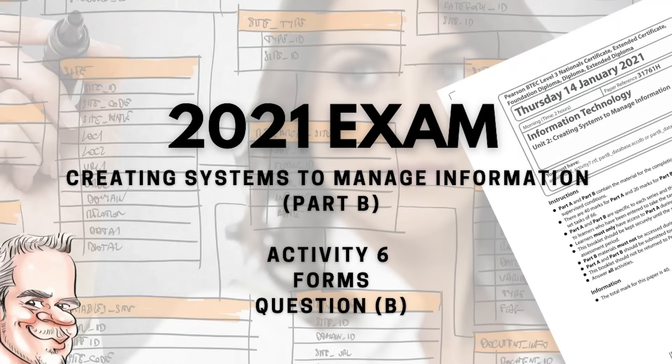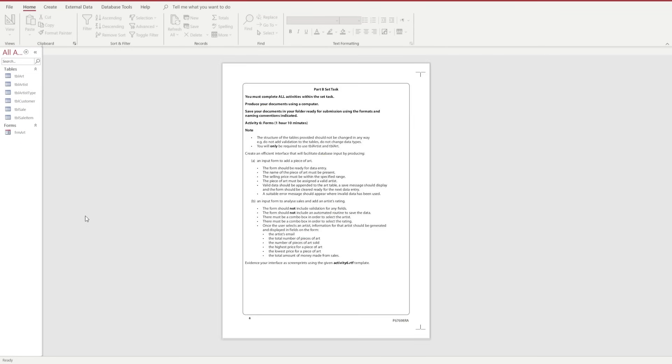Hi guys and welcome to the next video in the 2021 exam series for the Creating Systems to Manage Information paper. We're going to be looking at activity 6 and question B in this video. We've got to create an input form to analyze sales and an artist's ratings, so we're going to jump straight into the creation of this form.